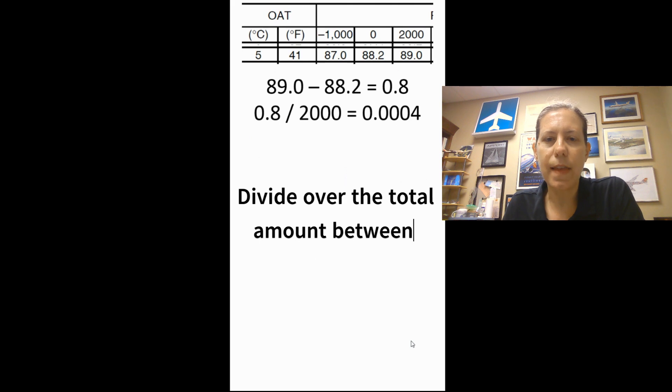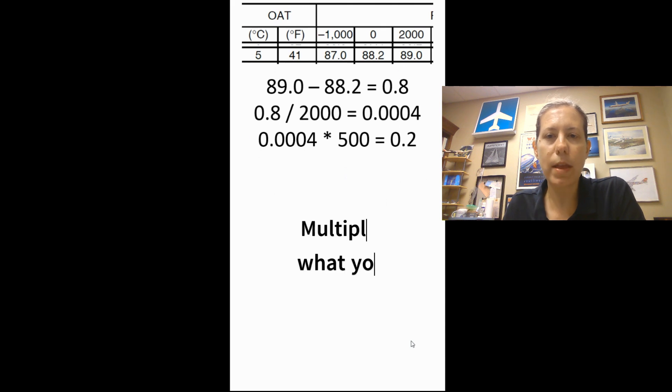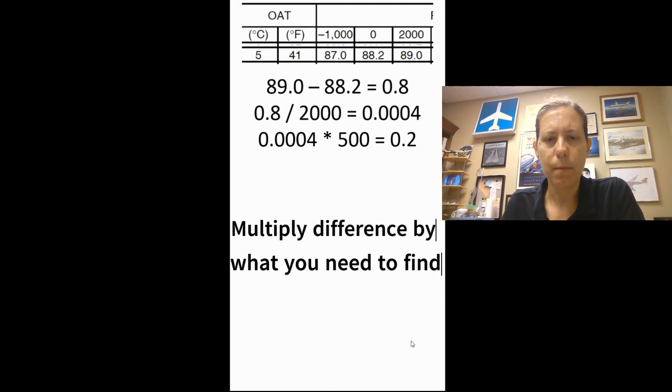Next, I divide that 0.8 by 2,000 and I get 0.0004 per 1,000 feet. We want to know at 500 feet, so I take the 0.0004, multiply it by 500 feet, and I get 0.2.